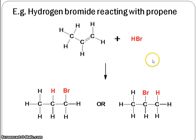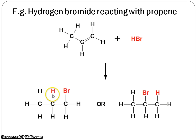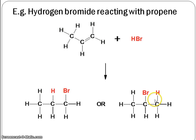Here we have propene reacting with HBr. Hydrogen bromide adds on to the carbons of the double bond. The hydrogen can add on to the middle carbon with bromine adding on to the other carbon, or alternatively hydrogen adds on to the end carbon and bromine adds on to the middle carbon. So we get a mixture of products.